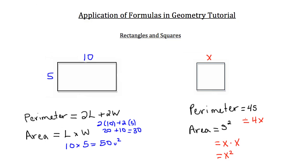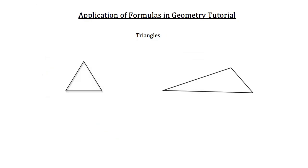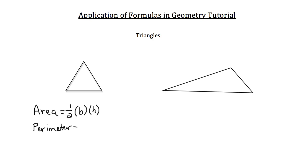That's how you calculate perimeter and area of rectangles and squares. Now let's look at triangles. Triangles have their own special formula for area: one half times the base times the height. To calculate the perimeter of a triangle it's the same idea — just the distance around all the sides.